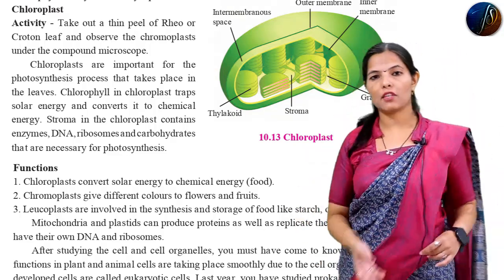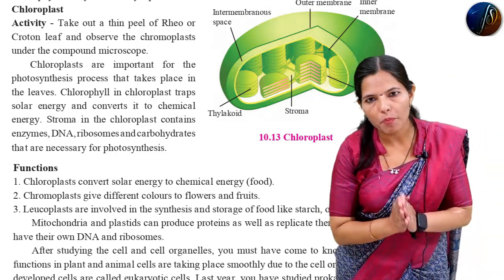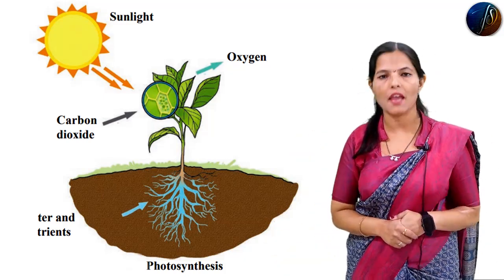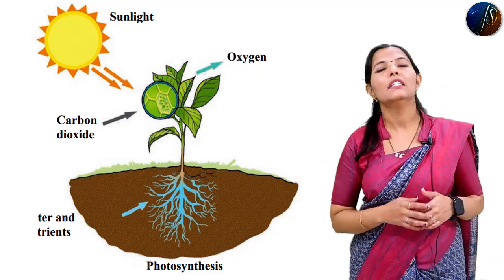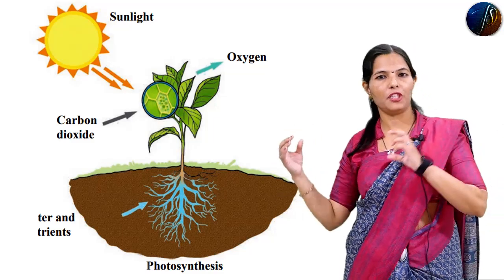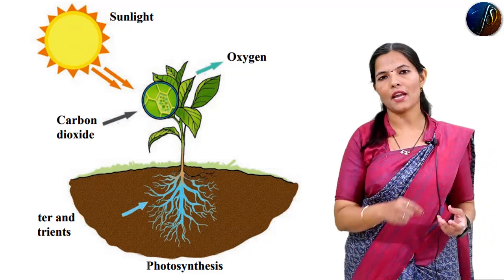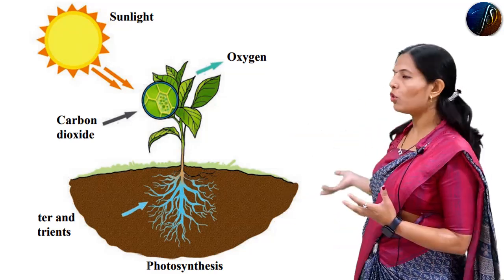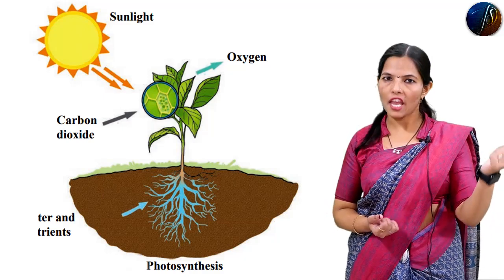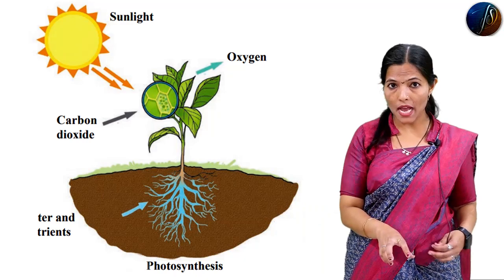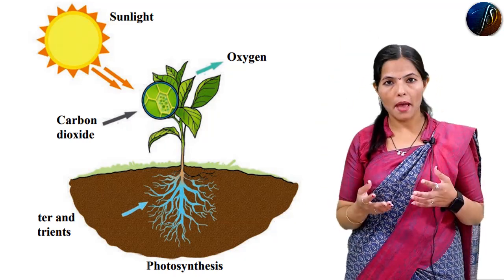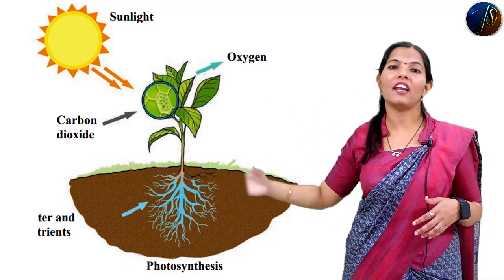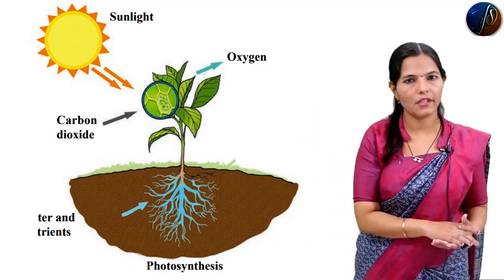What is the function of chloroplast? Chloroplast is very important for the process of photosynthesis. The process by which plants make their own food is called photosynthesis. Plants take carbon dioxide from the air, and in the presence of sunlight, they form food in the form of sugar or glucose, and oxygen gets released.